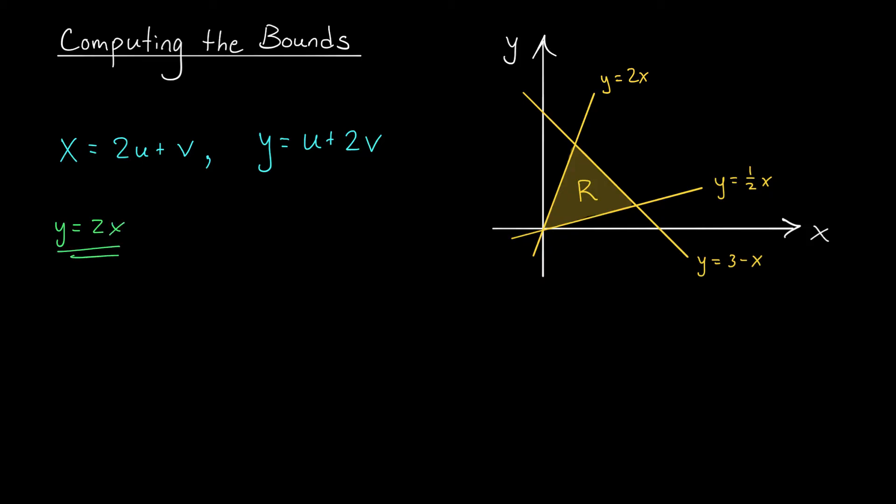If I replace y with u + 2v I have u + 2v on the right and that's supposed to be equal to 2x. Well x is 2u + v. If I simplify this I get u + 2v = 4u + 2v. I can throw out those two v terms and move one of my u's to the other side to get 3u = 0, but that must mean that u = 0. Ah very nice.